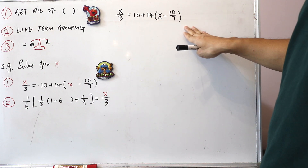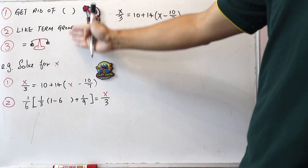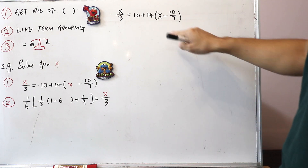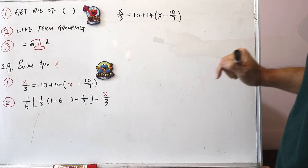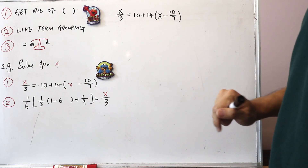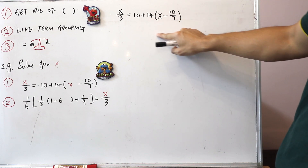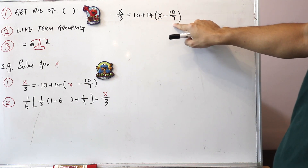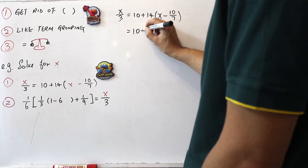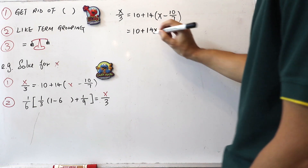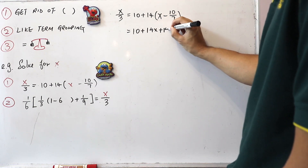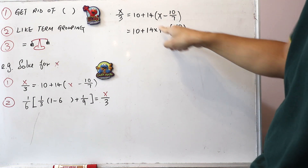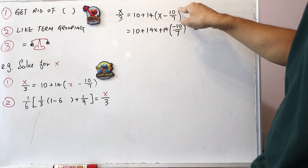A lot of students find these questions difficult because they don't know where to start, so that's why I'm giving you these three highlights. Let's work on them one by one, starting with highlight number one: get rid of the brackets. Here we see a round bracket. To remove it, you multiply 14 into each term inside the round brackets — meaning you multiply 14 by x and by minus 10 over 7. So it becomes 10 plus 14 times x, which is 14x, plus 14 multiplied by minus 10 over 7.